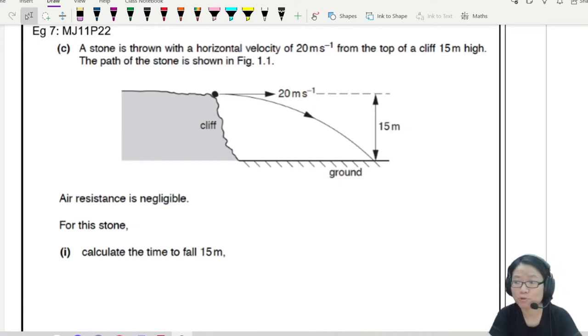So you have learned the theory about projectiles, 2D motion. Now we're going to look at a simple example. This question is from May, June 11, paper 2.2, only part C.